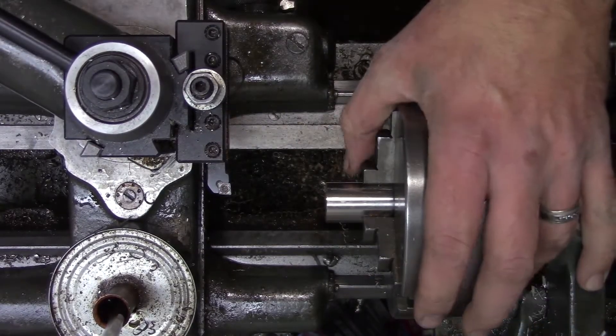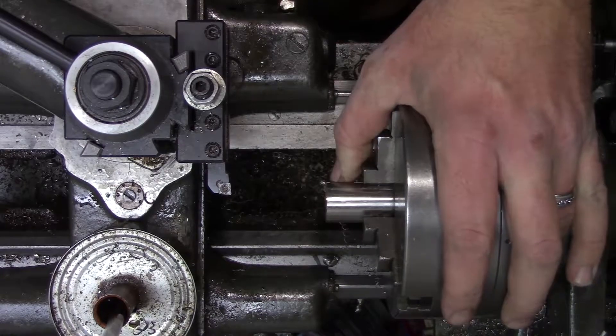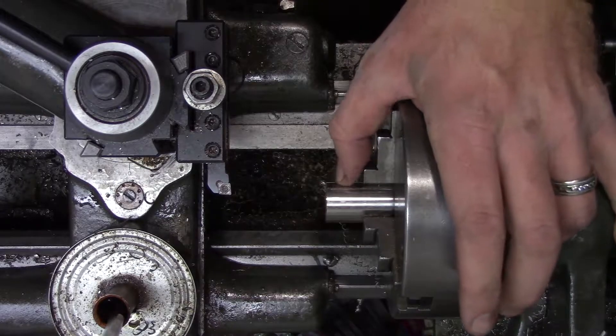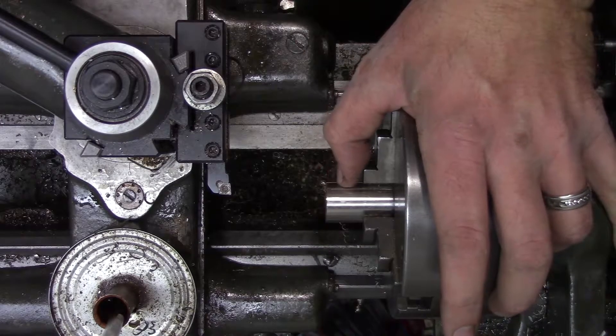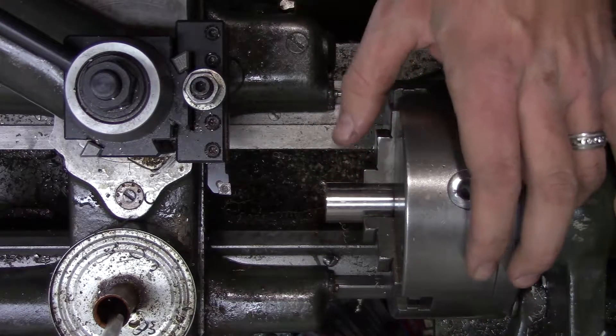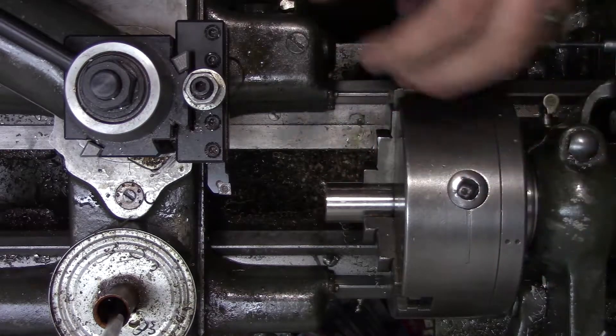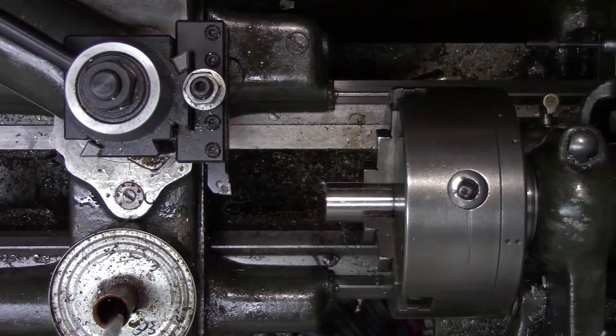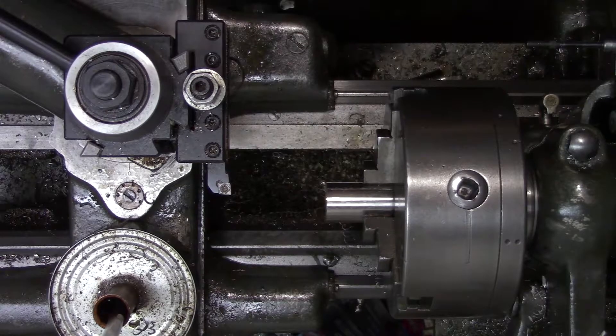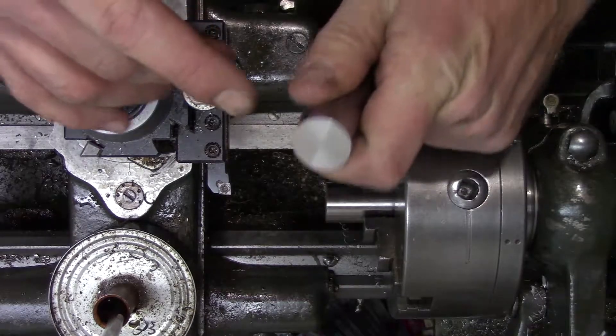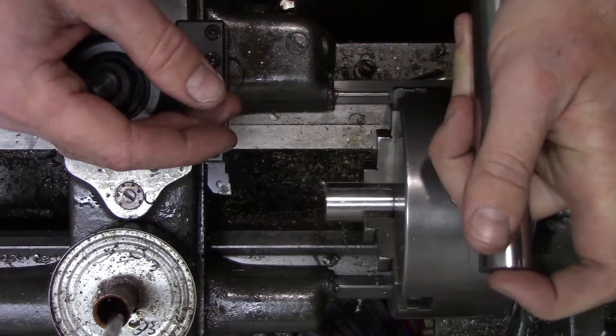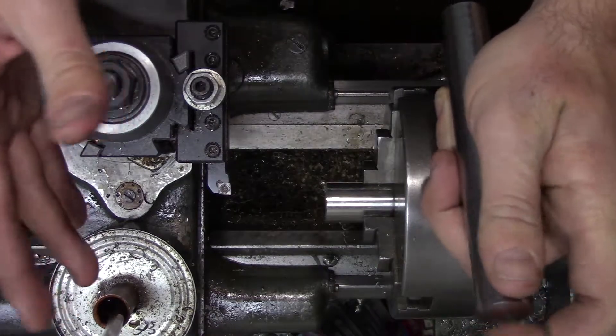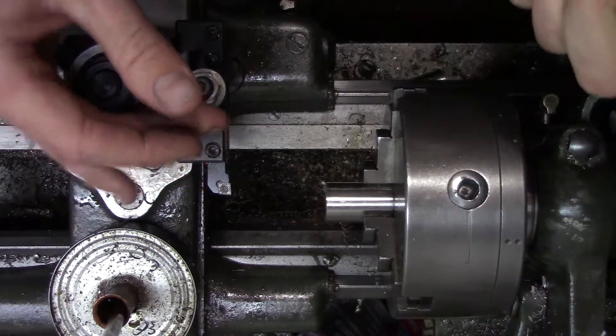Alright, the stock we're going to be using today for the cranks and the flywheel is 304 stainless steel. I'm using 304 stainless because I like working with it. It is a pretty free machining stainless. Typically stainless is pretty difficult to work with in terms of machining. However, 304 stainless is pretty free machining. I like to consider it the lead alloy or 12L14 of stainless.